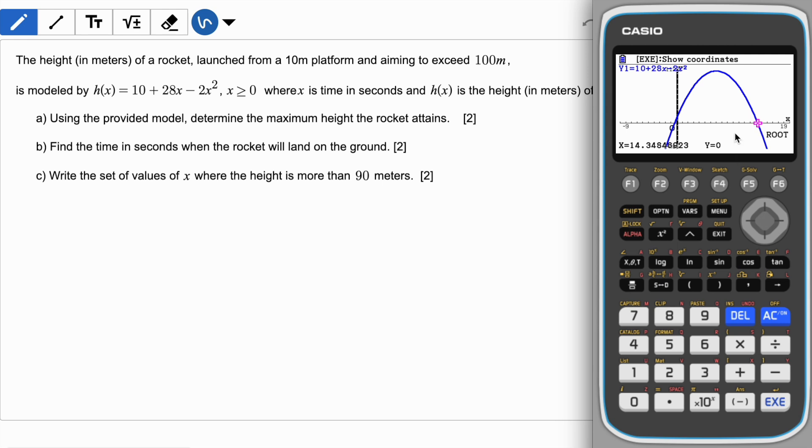For this function my domain would be from zero to 14.3468. You can round depending on the question, if it is three significant figures just round it to 14.34 or just three. Next part you can find out the maxima, click again g solve, click on maxima. The maximum height achieved by this function is 108 at seven seconds or seven minutes depending on your question. Using the provided model determine the maximum height of the rocket attained, so that is 108 meters. Find the time in seconds when the rocket will land on the ground, so in that case you have to find out the x-intercept which means roots and go to the second root. Remember to navigate the roots between these two arrow buttons.